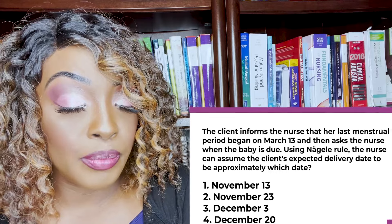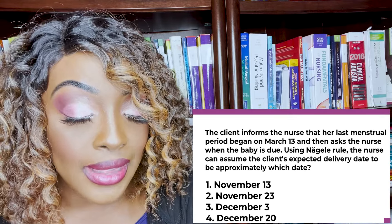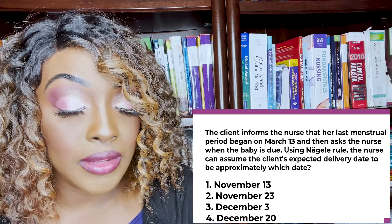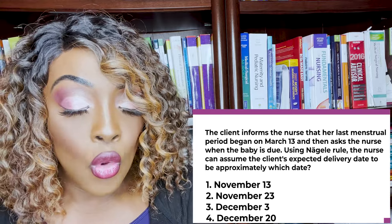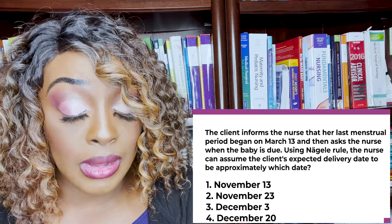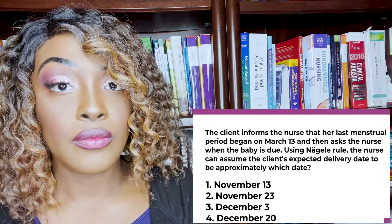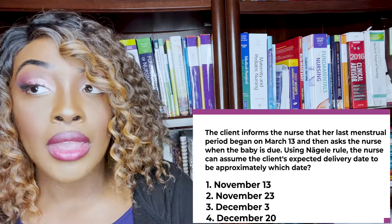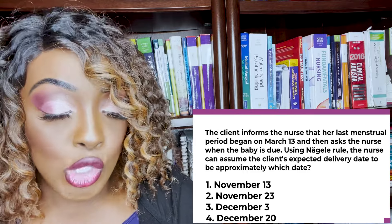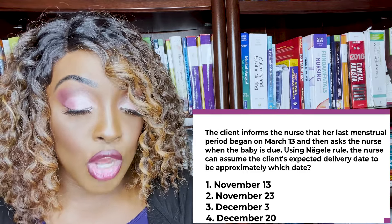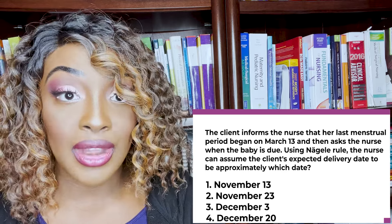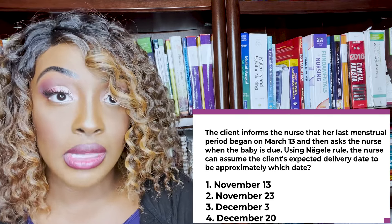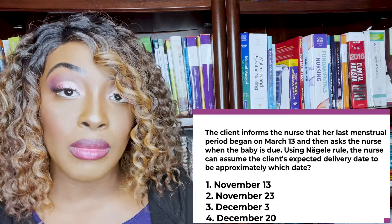The client informs the nurse that her last menstrual period began on March 13th and asks when the baby is due. Using Naegele's rule, the nurse can assume the expected delivery date is approximately which date? One: November 13th. Two: November 23rd. Three: December 3rd. Or four: December 20th. The correct answer is four — December 20th. You go back three months from March to get December, then add seven days: 13 plus 7 equals 20. So you always go back three months and add seven days.